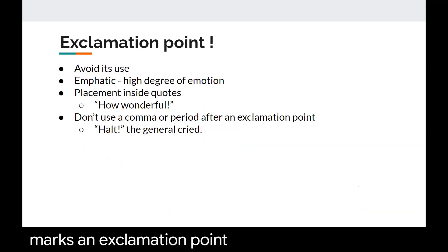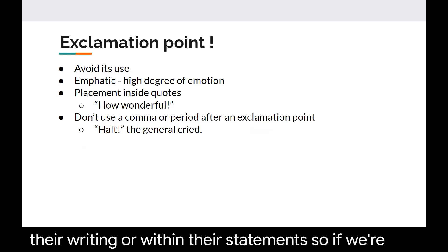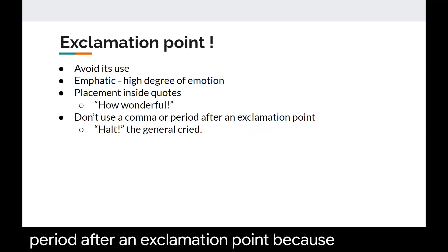An exclamation point is meant to be emphatic. It provides a high degree of emotion and so therefore we as media writers want to avoid it as much as possible. Using an exclamation point usually shows that you have some kind of bias or opinion so therefore we try to avoid it. But of course people that we are quoting may use exclamation points within their writing or within their statements so if we're using them as quotes you're going to place them inside the quotation marks. Don't use a comma or period after an exclamation point because the emphasis of the exclamation point takes the place of ending the sentence with a comma or period.